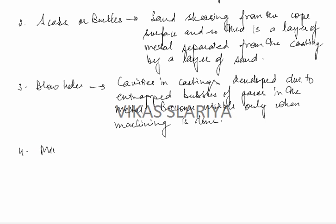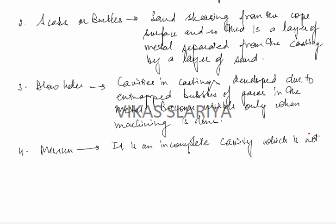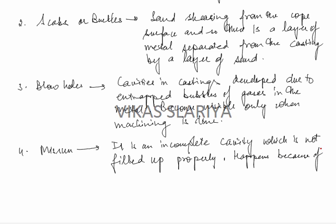Misrun is an incomplete cavity which is not filled up properly. It happens because of inadequate metal flow.